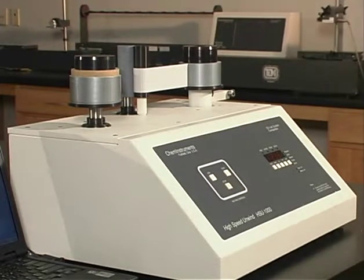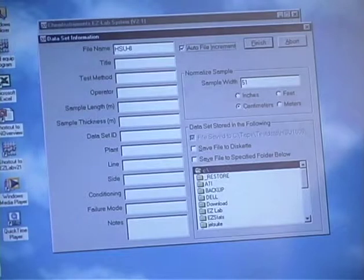After testing the roll, report any signs of adhesive transfer, delamination, tearing, or other occurrences in the unwound sample.